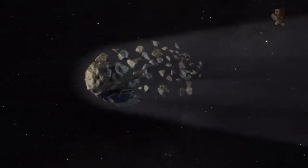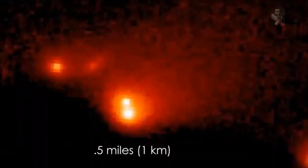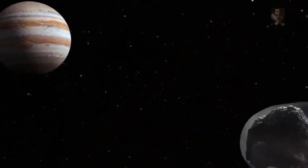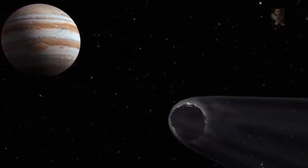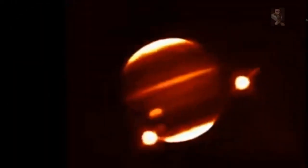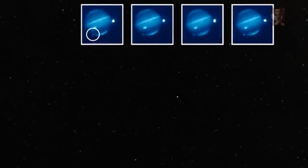When the comet was discovered in 1993, it already had been torn into more than 20 pieces traveling around the planet in a two-year orbit. Further observations revealed the comet, believed to be a single body at the time, had made a close approach to Jupiter in July 1992, and was torn apart by tidal forces resulting from the planet's powerful gravity. The comet was thought to have been orbiting Jupiter for about a decade before its demise.